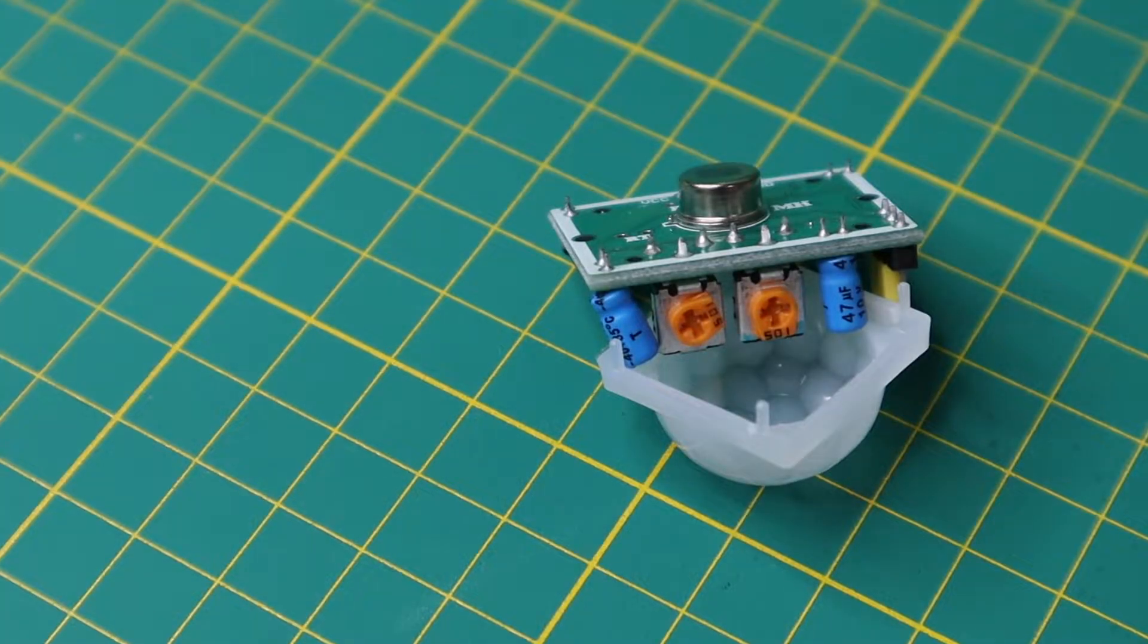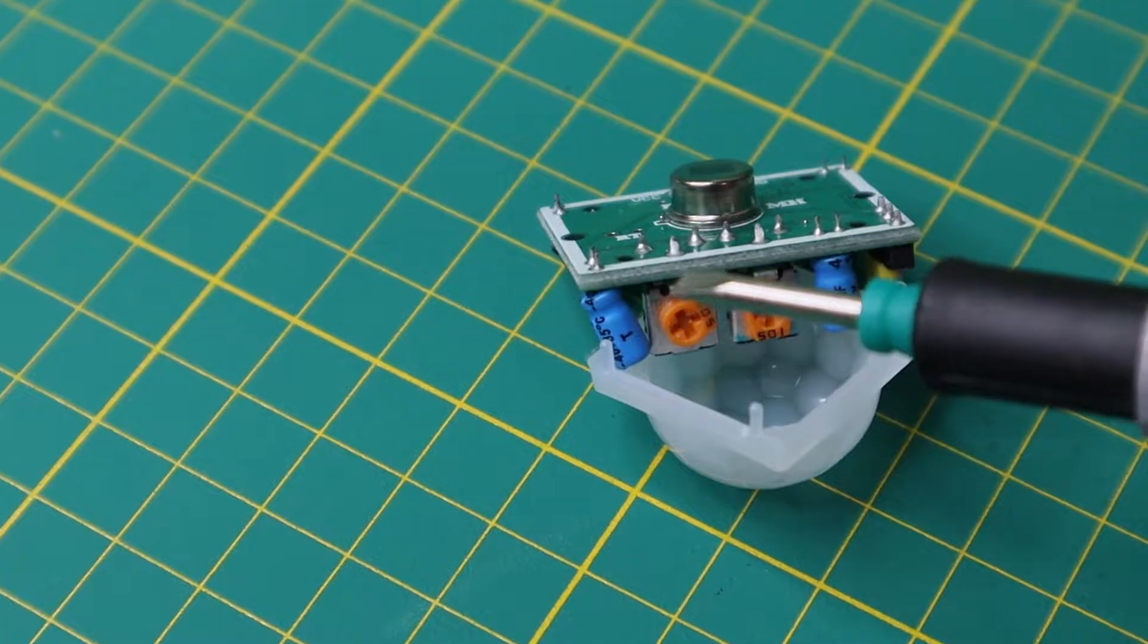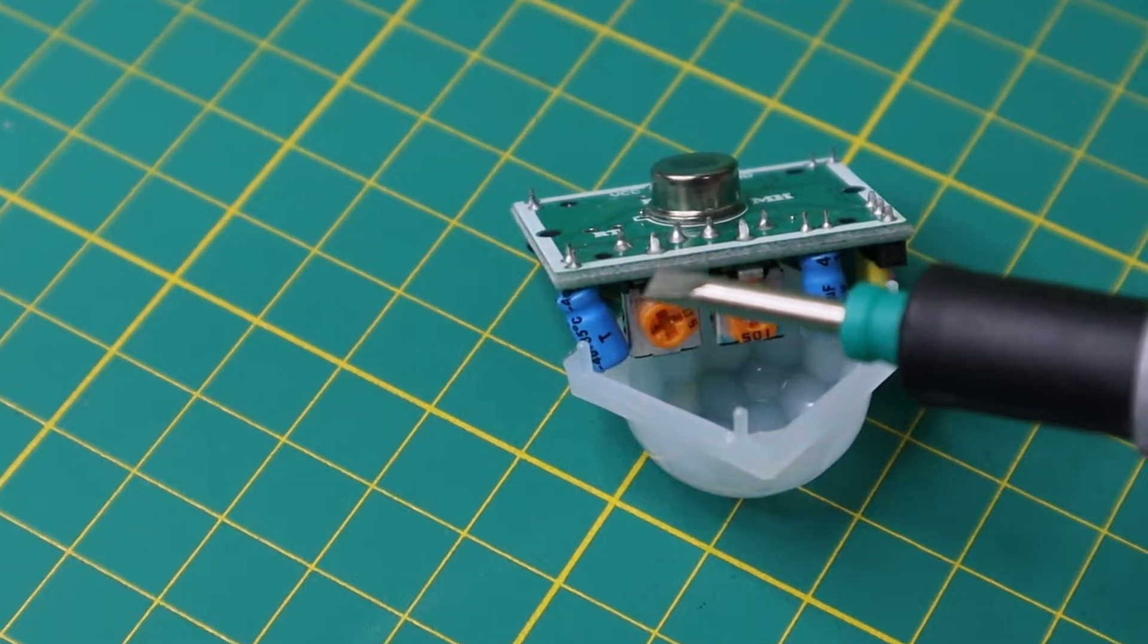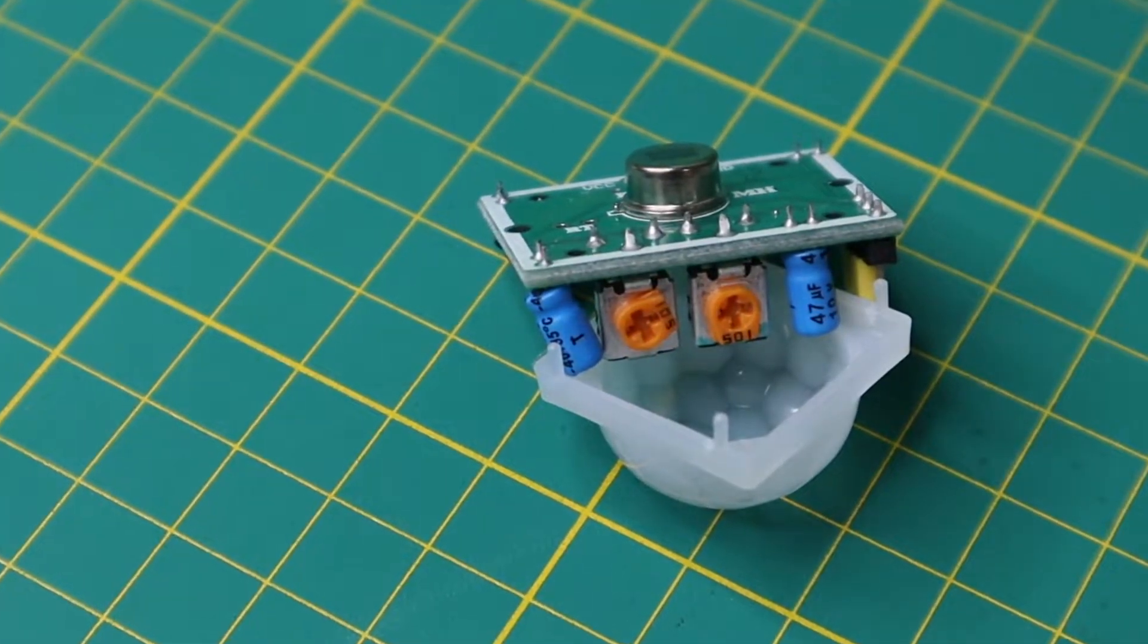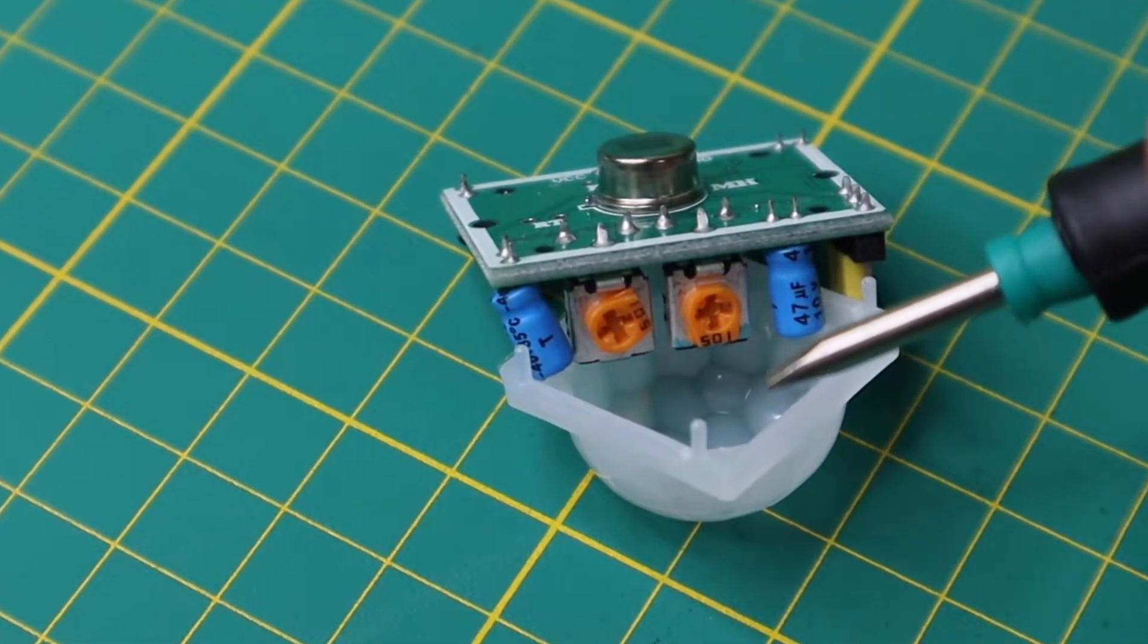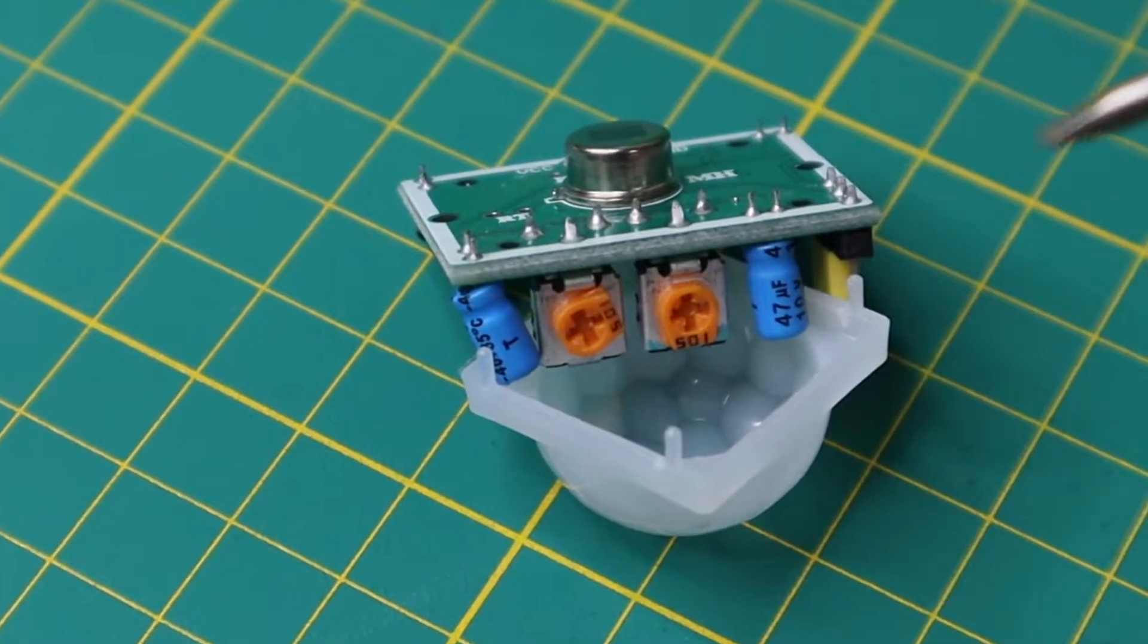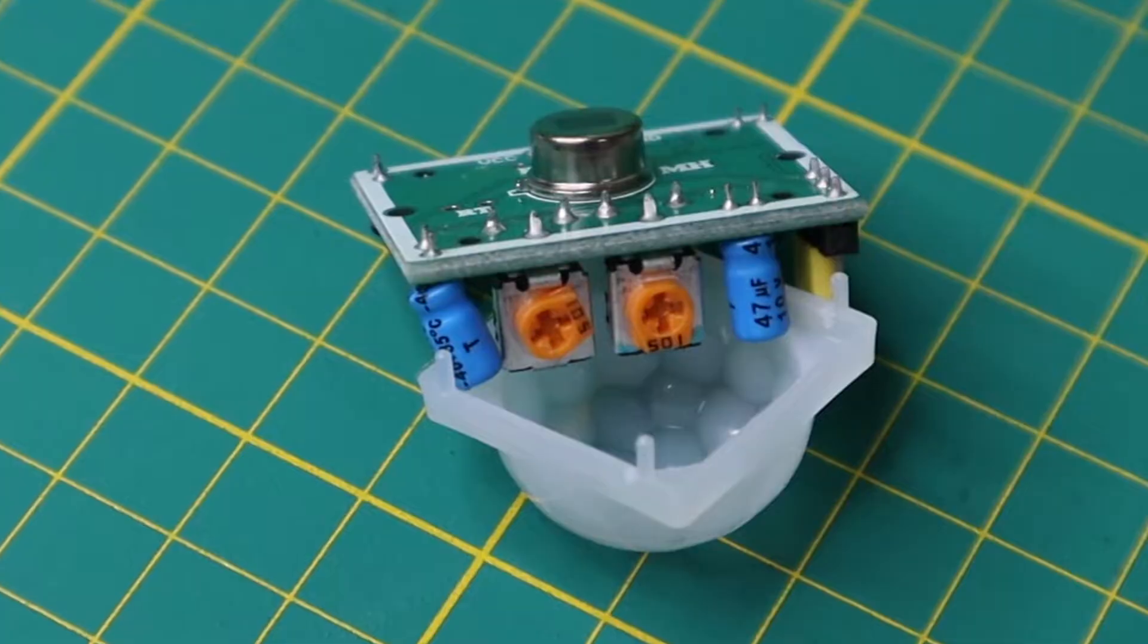There are two potentiometers. One will adjust the sensitivity of the PIR. The other pot will change the amount of time the PIR will wait after it has detected motion to begin detecting motion again. Full clockwise on the sensitivity pot is the highest sensitivity. Fully counterclockwise on the timer pot is the lowest amount of time, which I've noticed is approximately 10 seconds.